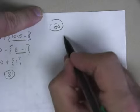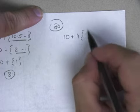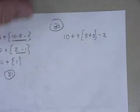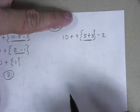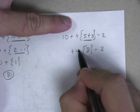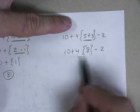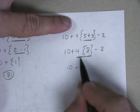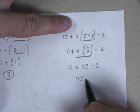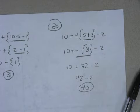And the last one, number 30. Let's do 10 plus 4 times, with a brace containing 5 plus 3, minus 2. First, work inside the braces: 5 plus 3 is 8. Bring down everything — the brace, minus 2, the 4, and the 10. I have addition, multiplication, and subtraction, so I multiply first: 4 times 8 is 32. Then 10 plus 32 is 42, minus 2 gives you 40. And there's a problem similar to number 30. Good luck on your homework.